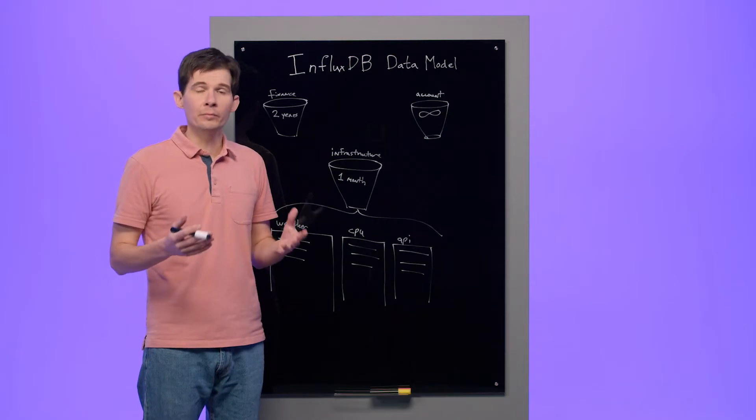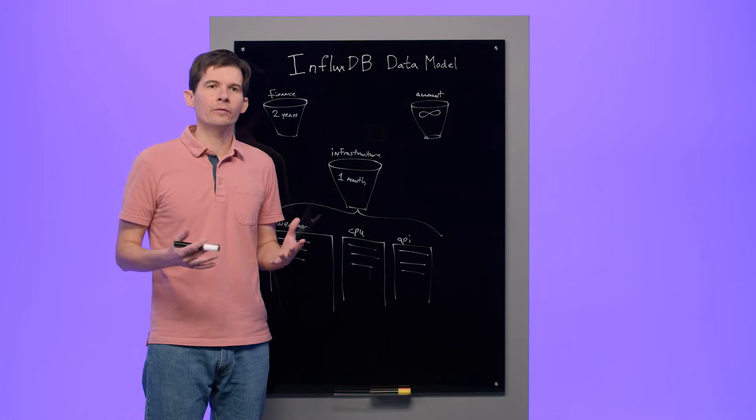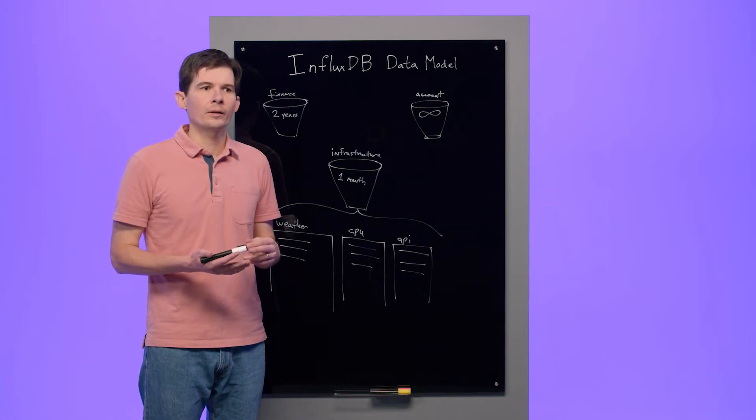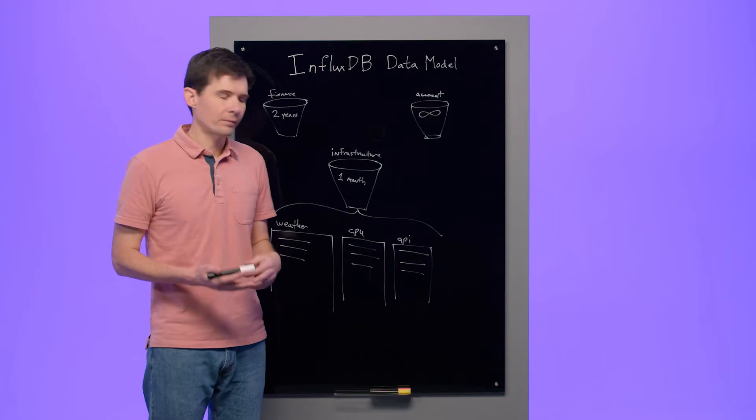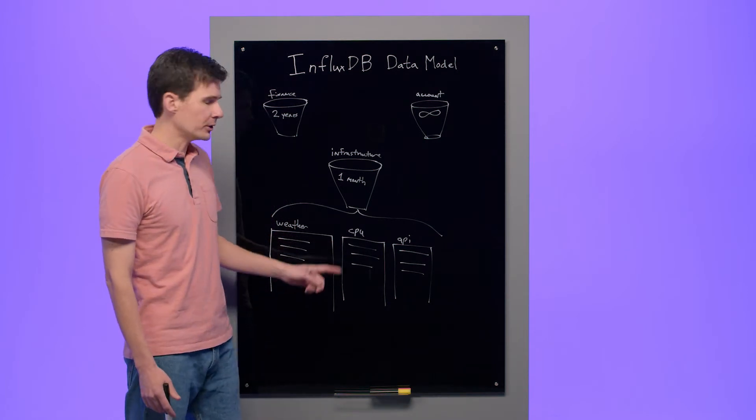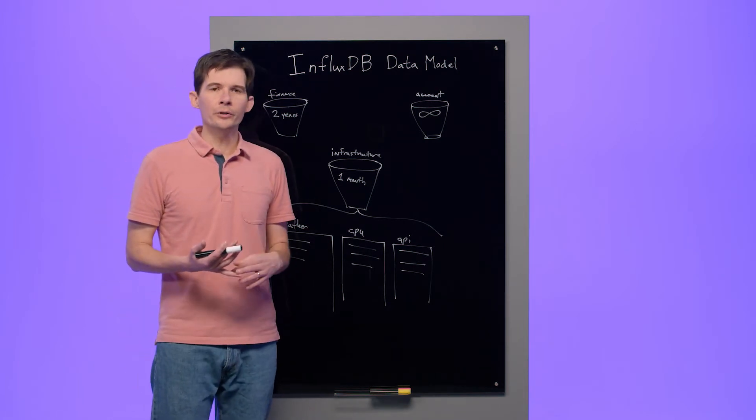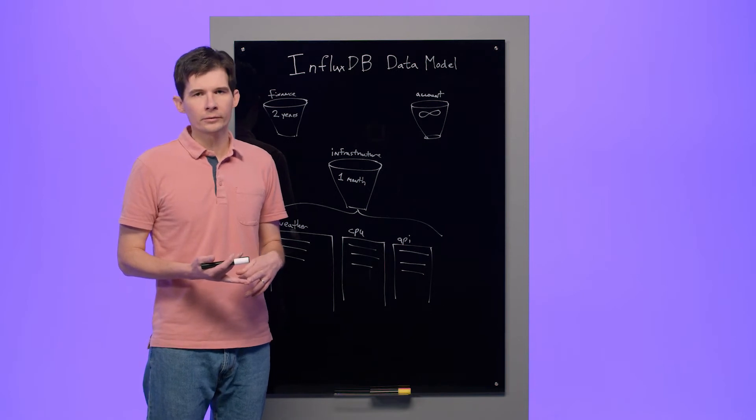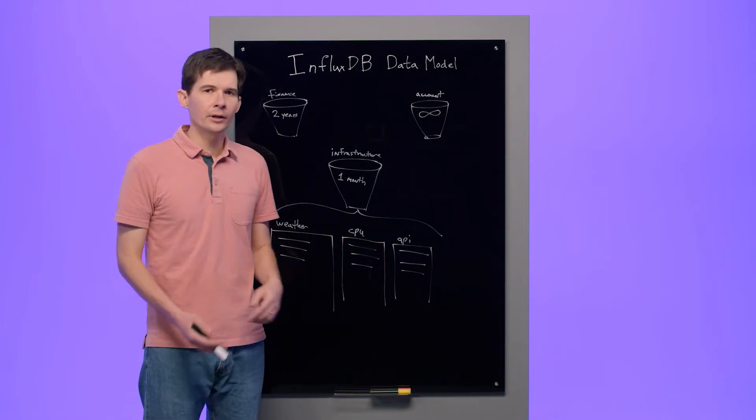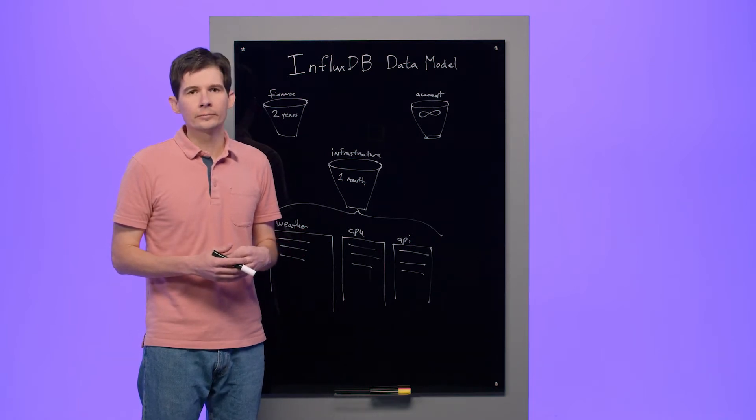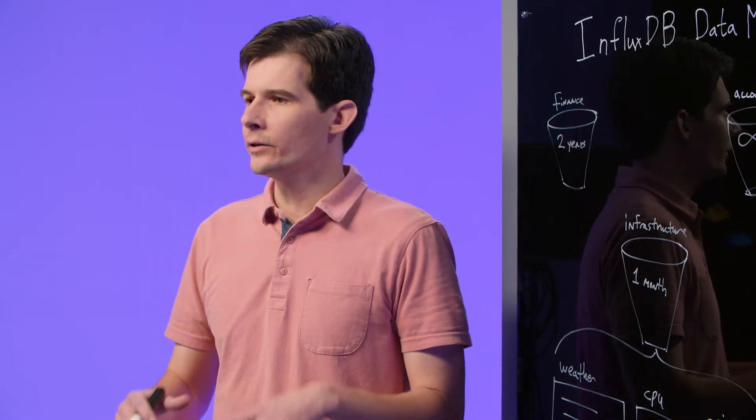We store data in measurements. This measurement is named weather, and it's a good place to keep track of things like temperature, humidity, wind speed, and direction. The CPU measurement is a good place to record CPU temperature and CPU utilization. And the API measurement is a good place to store application performance metrics for our API. Most of our customers organize their application around a few measurements.